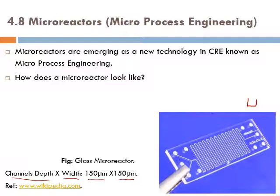So, if you have a cross-sectional cut through this reactor, you'll see that the channel is something like this, and the flow goes inside. The depth of the channel is only 150 micrometer, and the depth and the width as well are also 150 micrometer. That's why it's called micro-reactor.